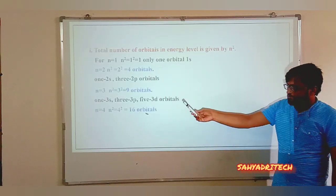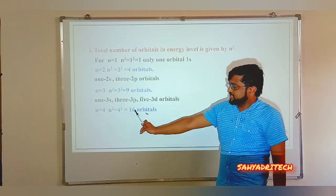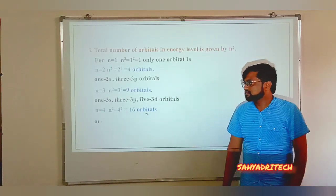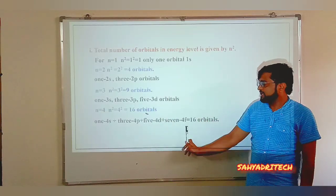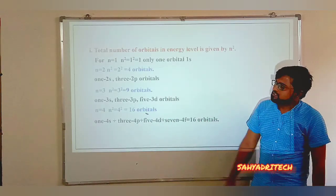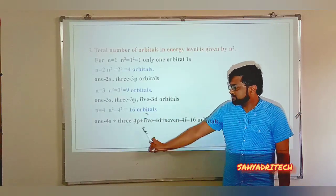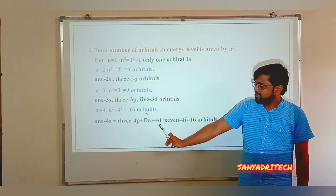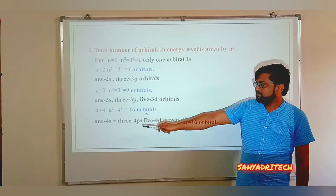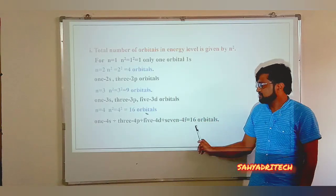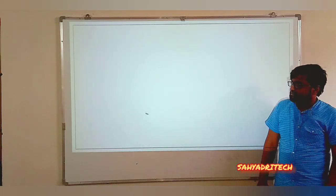For n = 4: 4² = 16 orbitals — one 4s orbital, three 4p orbitals, five 4d orbitals, and seven 4f orbitals, giving 1 + 3 + 5 + 7 = 16 total orbitals.